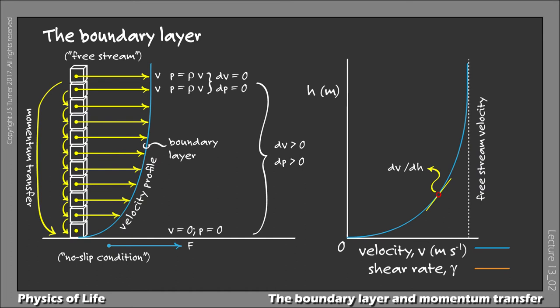OK, back to the boundary layer. At the free stream velocity, shear rate is minimized to zero. This makes sense. Once the velocity reaches free stream, there is no difference of velocity with respect to height, and shear rate will therefore be zero.